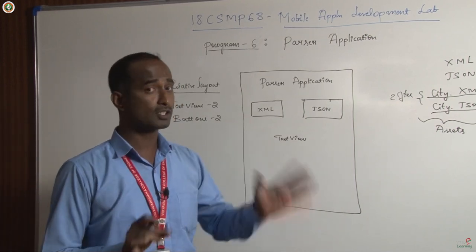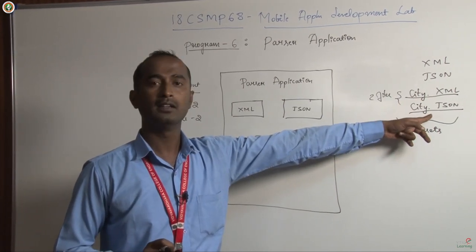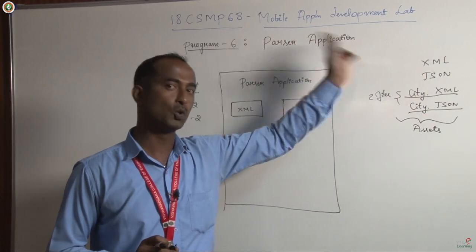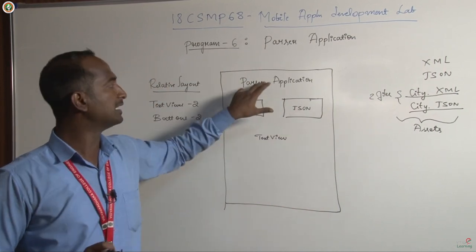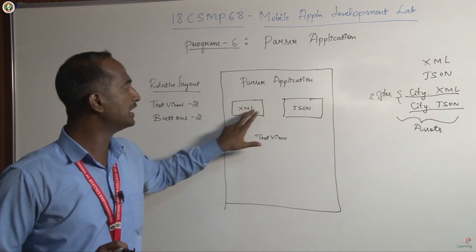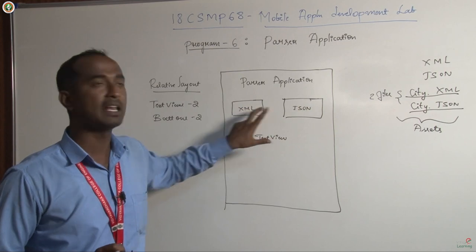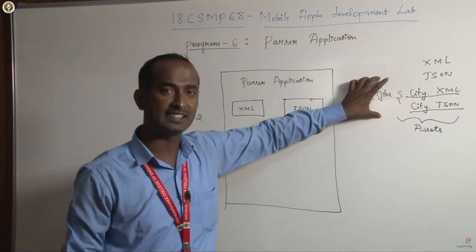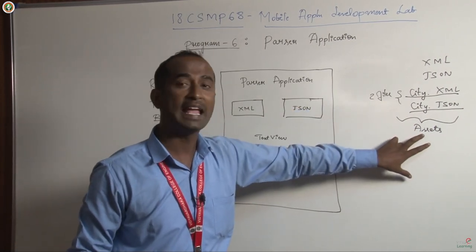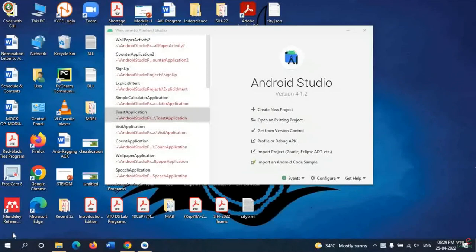I am going to use a relative layout. The layout requires two text views and two buttons. It is a simple application, but you must first have two files — city.xml and city.json — with information about two cities including name, temperature, humidity, longitude, and latitude. The two buttons trigger the methods for parsing XML and JSON, and the text view displays the results. Let's start the development.